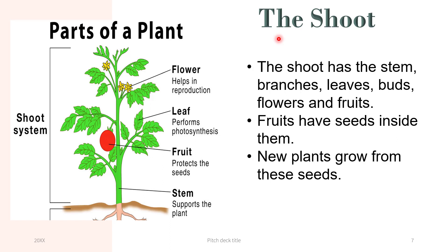Now let's talk about the shoot. The shoot has stem, branches, leaves, buds, flowers and fruits. Fruits have seeds that grow.